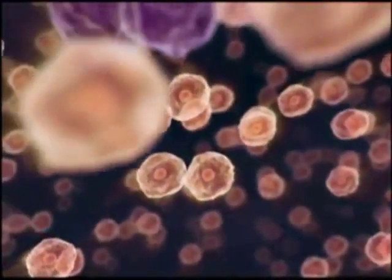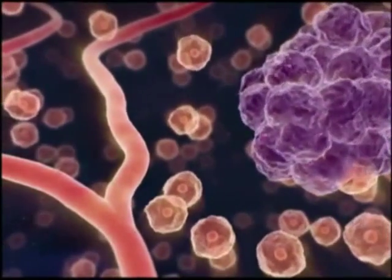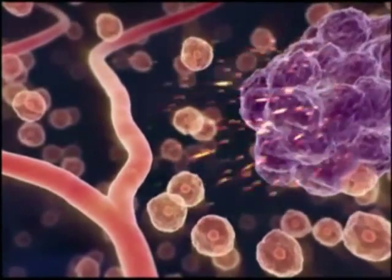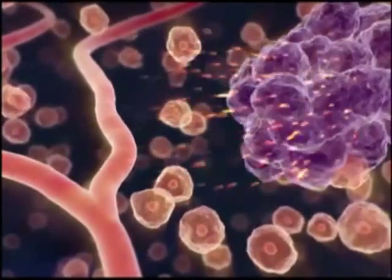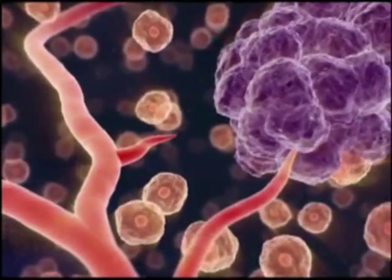However, tumors can develop their own blood supply by a process known as angiogenesis. The process begins when tumor cells secrete angiogenic growth factors that stimulate endothelial cells lining nearby vessels.